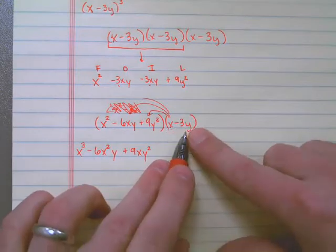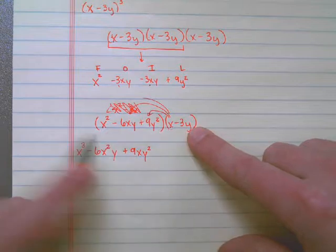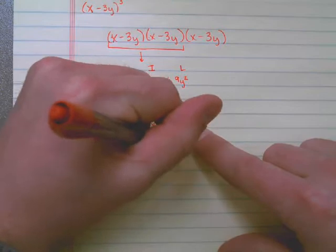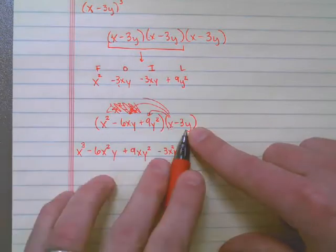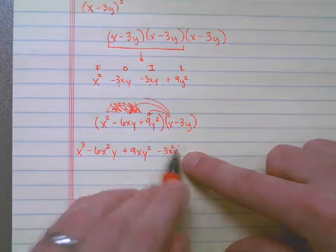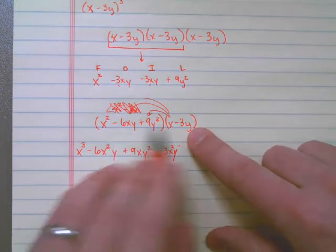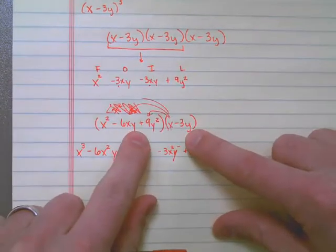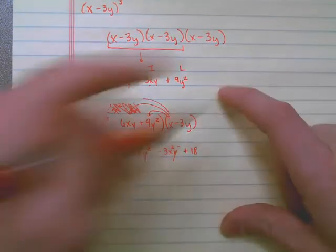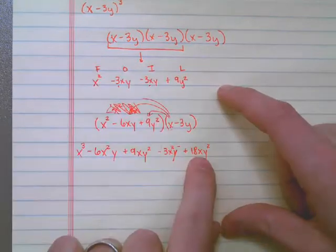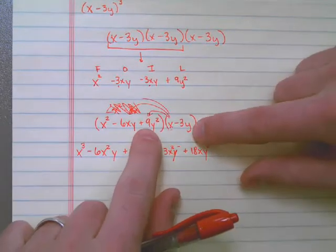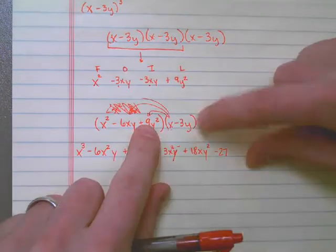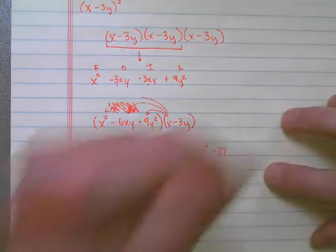Now I need to do the same thing with the negative 3y. So I take negative 3y times x squared, that would be negative 3x squared y. I have negative 3y times negative 6xy. So negative 6 times negative 3 is positive 18. I have an x and y times y, which is y squared. Now I have negative 3y times positive 9y squared. Well, negative 3 times positive 9 is negative 27, and I have y squared times y, which gives me y cubed.